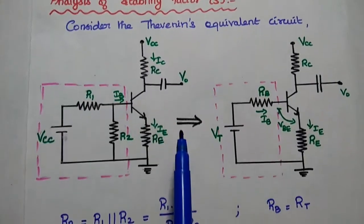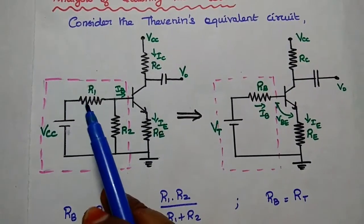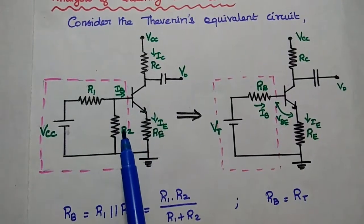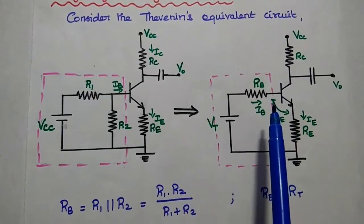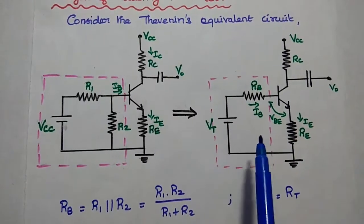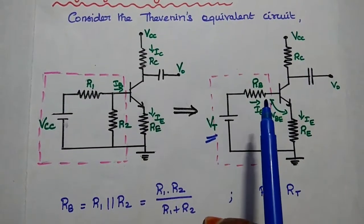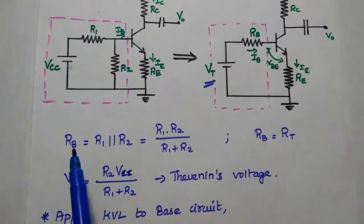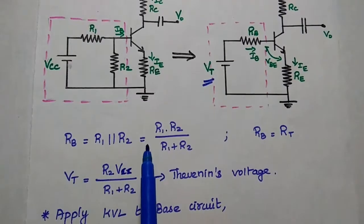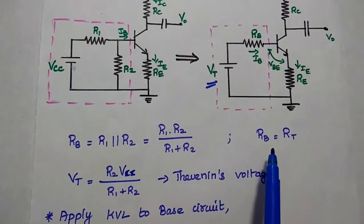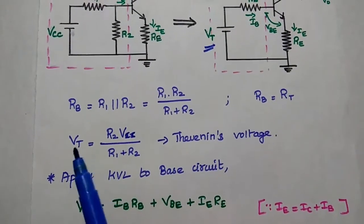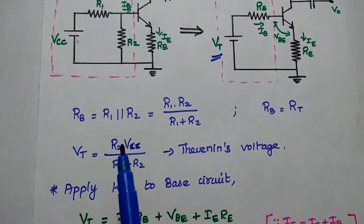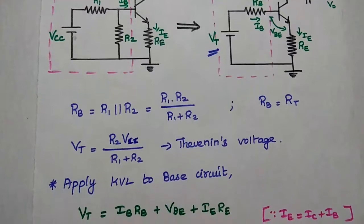For our analysis, we have to consider Thevenin's equivalent circuit — that is, a voltage source in series with a resistor. This voltage divider circuit can be drawn such that the R1 and R2 parallel combination is represented as the base resistor RB. Here, Vt represents Thevenin's voltage, and RB represents the parallel combination of R1 and R2. From this circuit, RB equals R1 parallel R2, that is R1·R2 divided by R1+R2. The Thevenin's voltage equals R2·VCC divided by R1+R2.